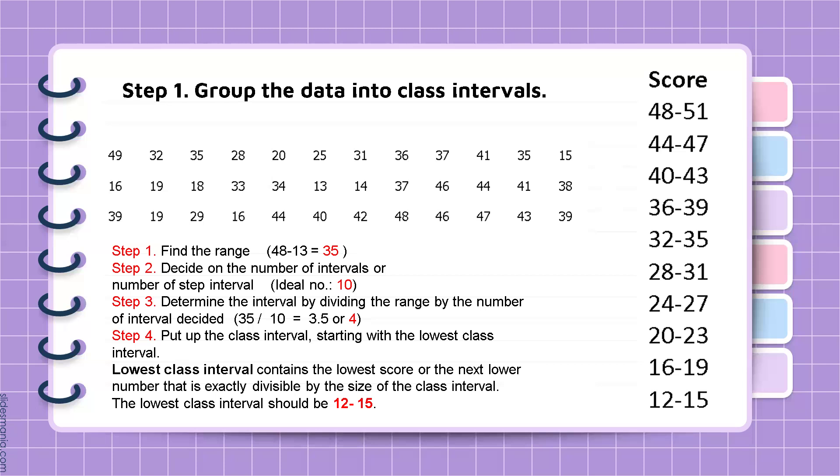Next, we go to the next class interval. We count 4 steps, so 16, 17, 18, 19. Then the next class interval, 20, 21, 22, 23. So 20 to 23. And we do the rest until we cover the highest score.